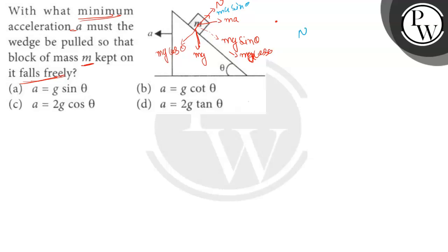N plus ma sin theta equals mg cos theta. At this condition, the block is on the wedge, attached to the wedge. When the block is attached to the wedge, there is no free fall.